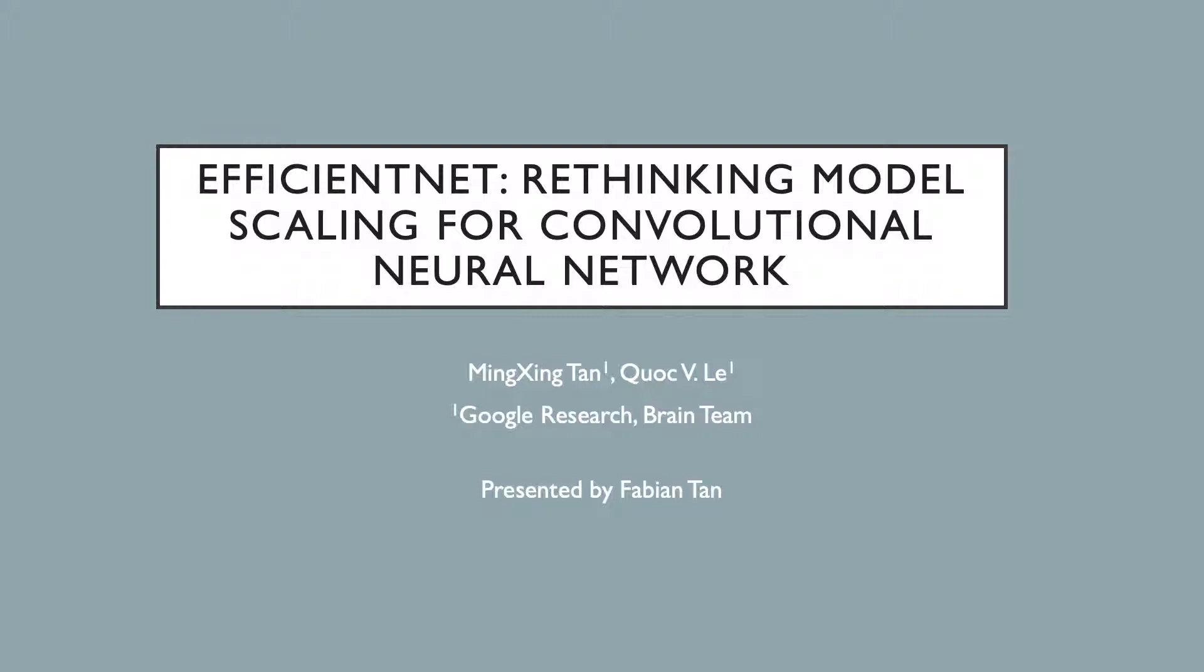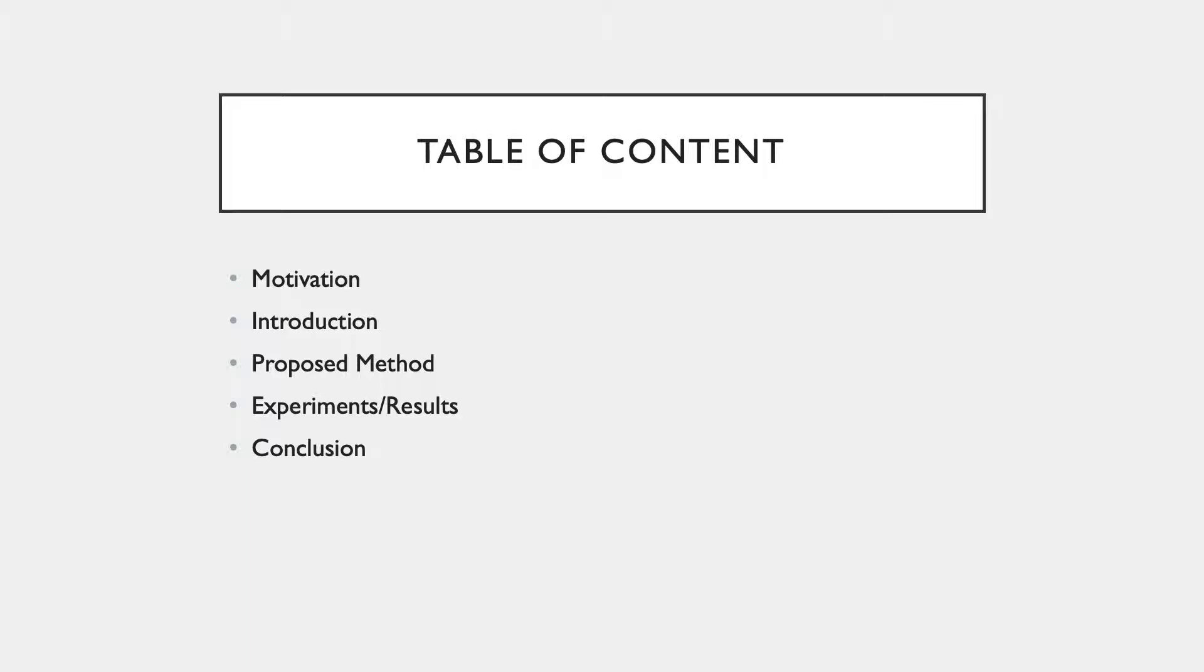I'm going to talk about a paper called EfficientNet: Rethinking Model Scaling for Convolutional Neural Networks by Mingxing Tan and Quoc Le. These are the table of contents which I will be going through. I'll be first talking about motivation, the introduction, proposed method, experiment results, and finally the conclusion.